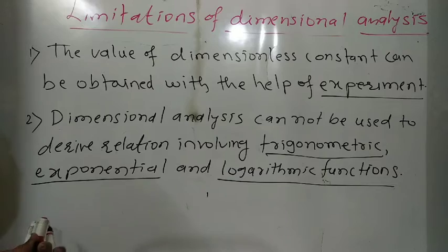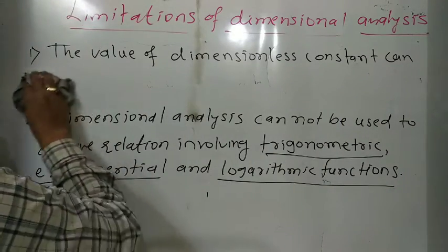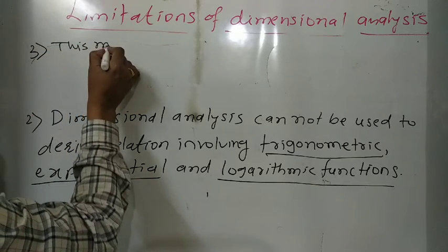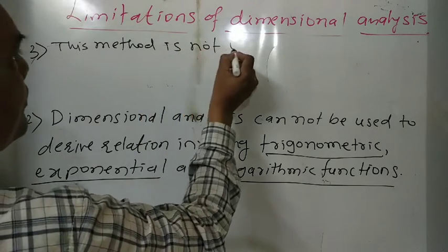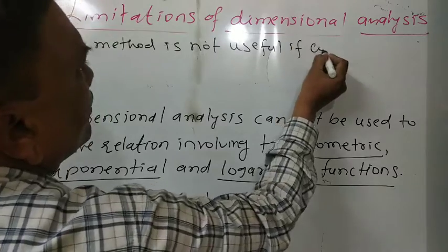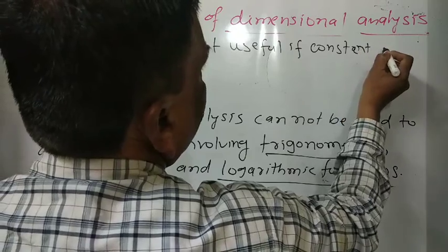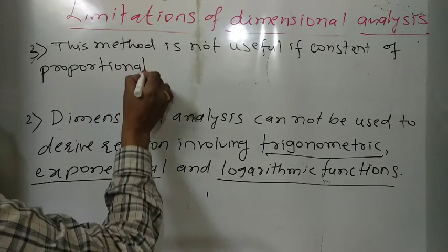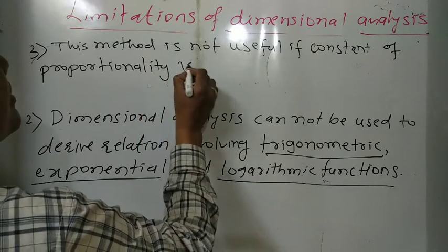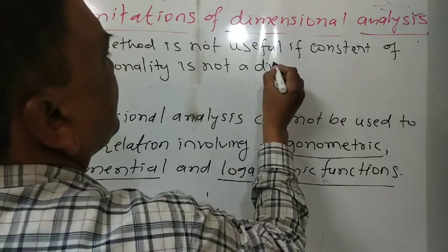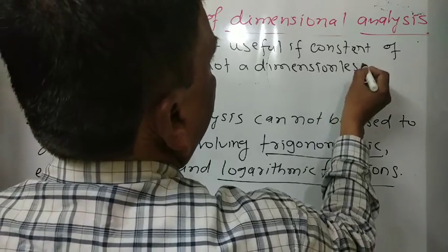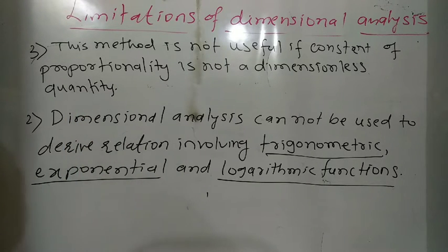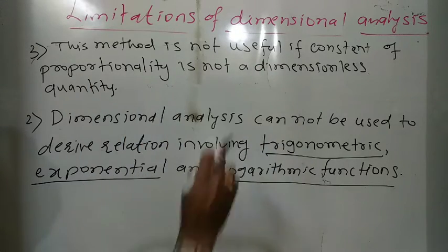The third limitation is that this method is not useful if the constant of proportionality is not a dimensionless quantity. This method is not useful if the constant of proportionality is not a dimensionless quantity.